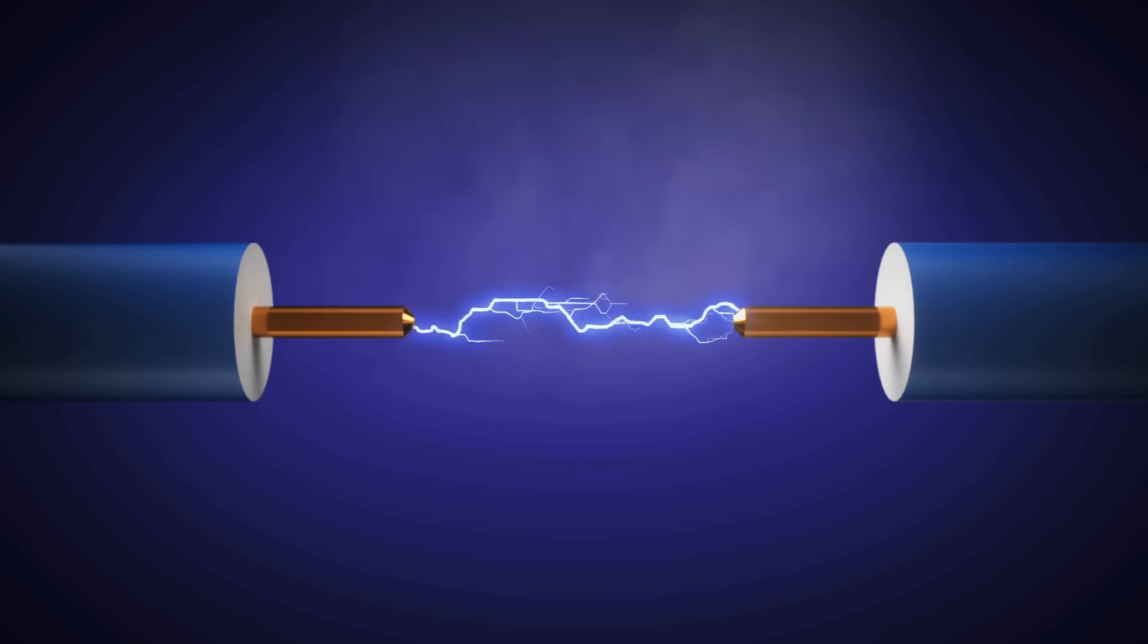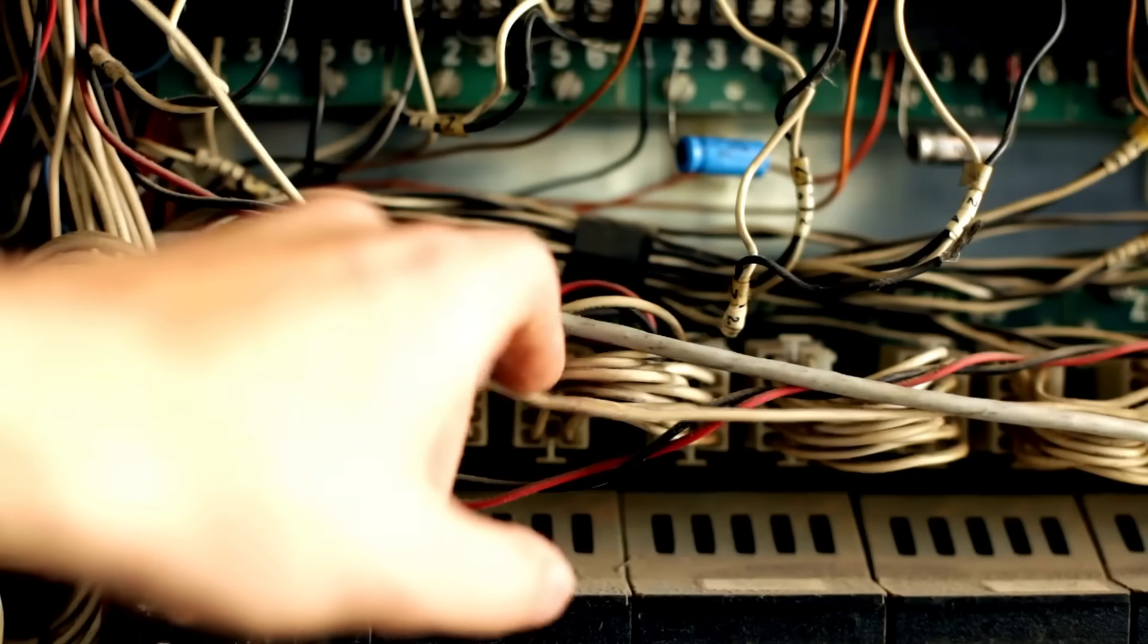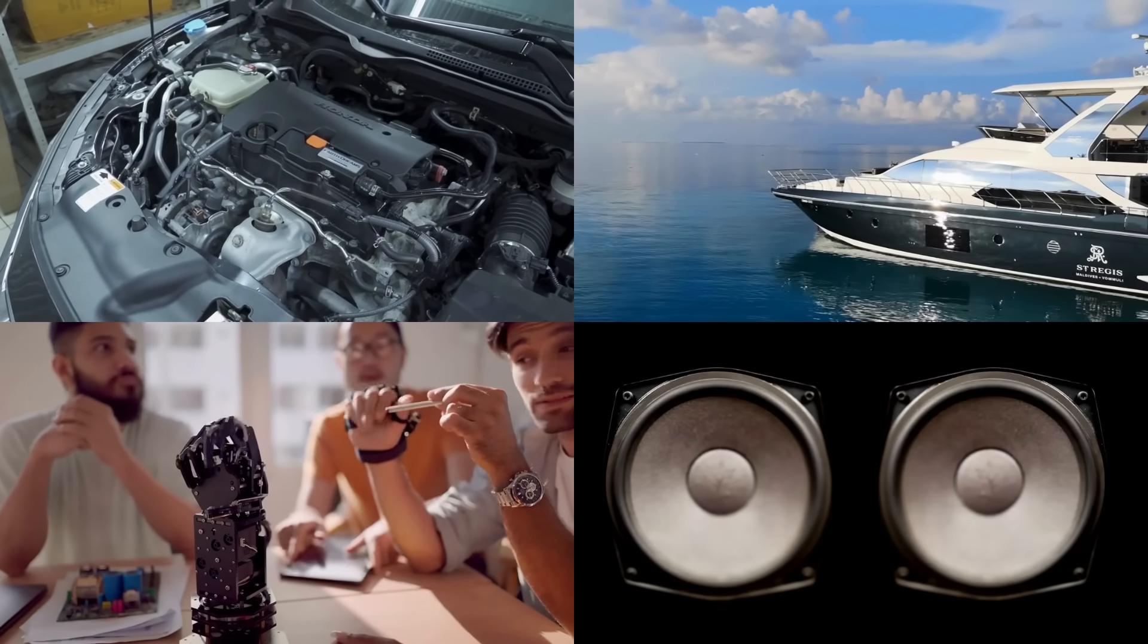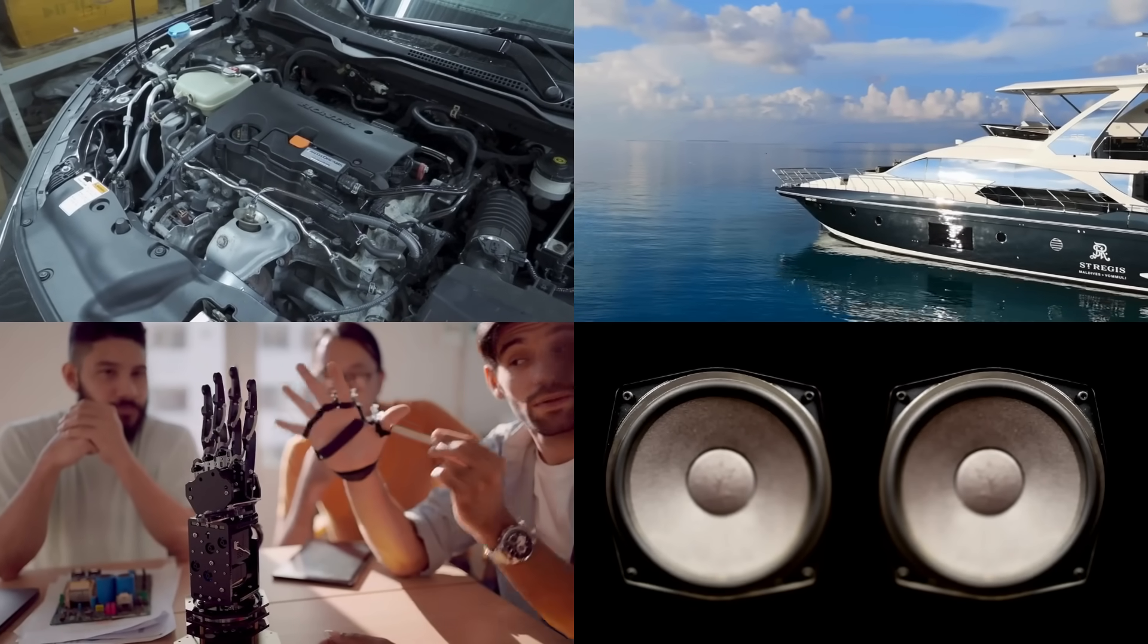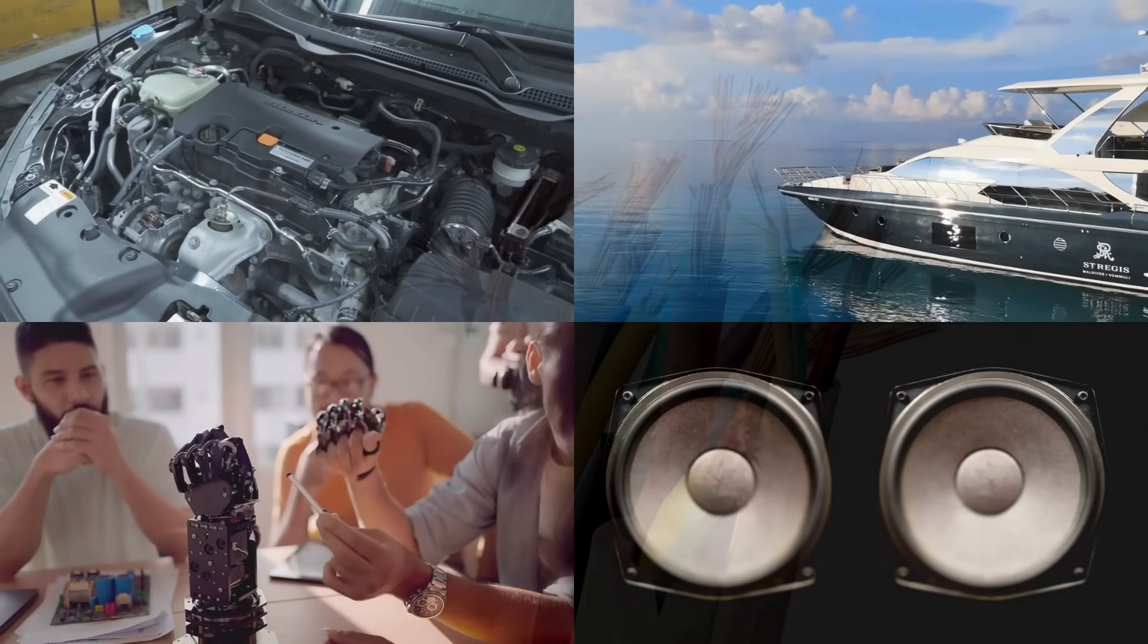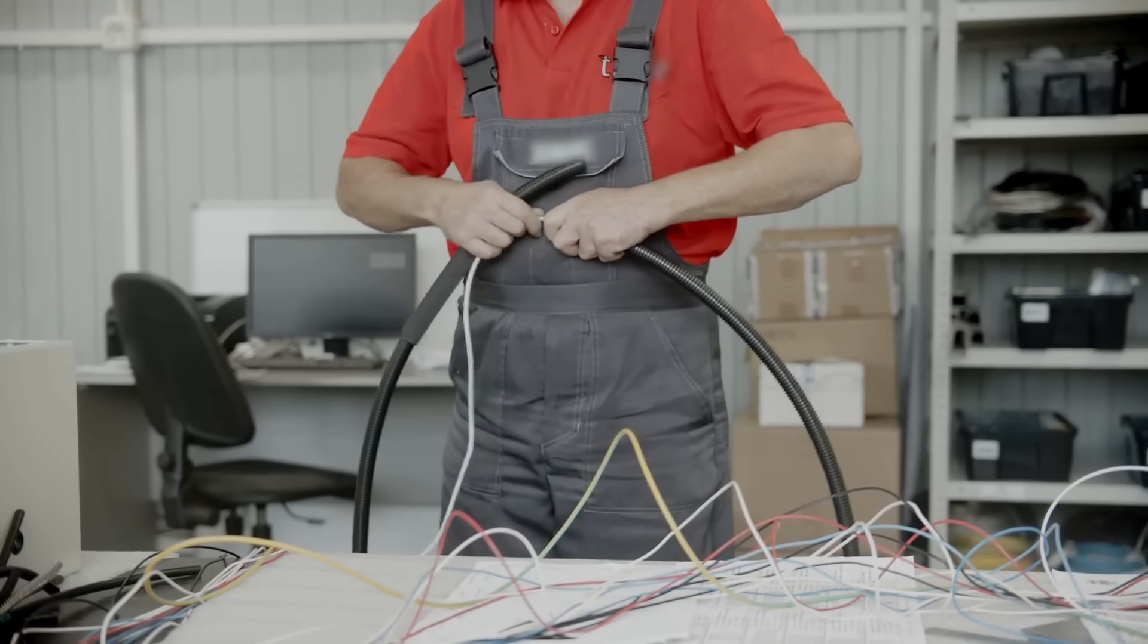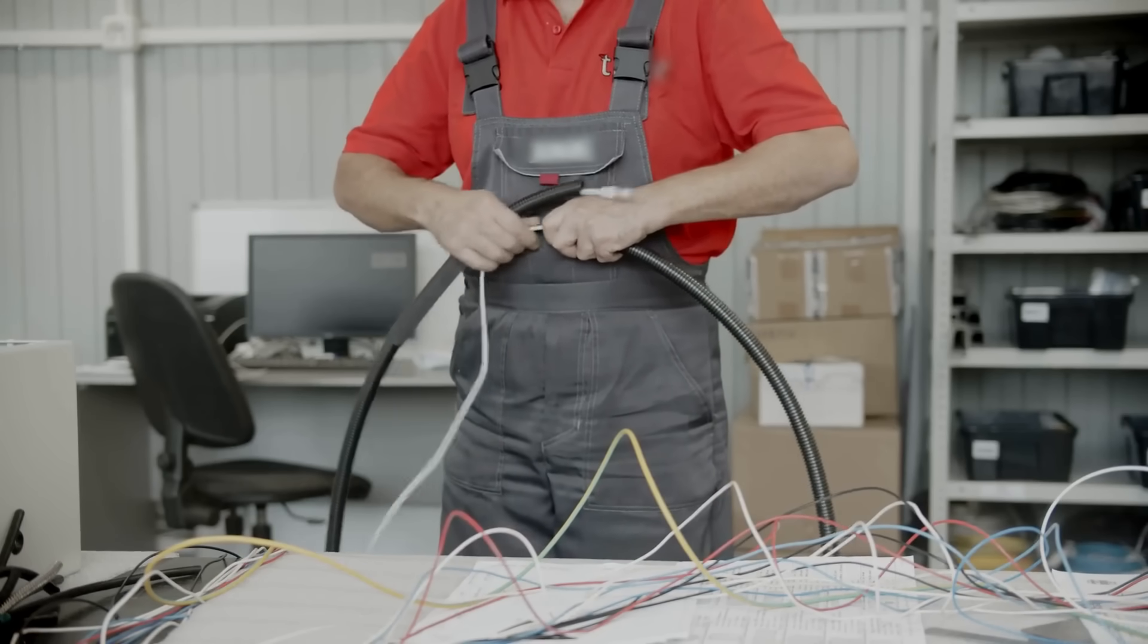But if you're wiring up something that's going to move or vibrate, like a car, a boat, a robot arm, or even a speaker system that you're constantly plugging and unplugging, stranded wire is what you want. It's built to move, bend, and flex without wearing out.